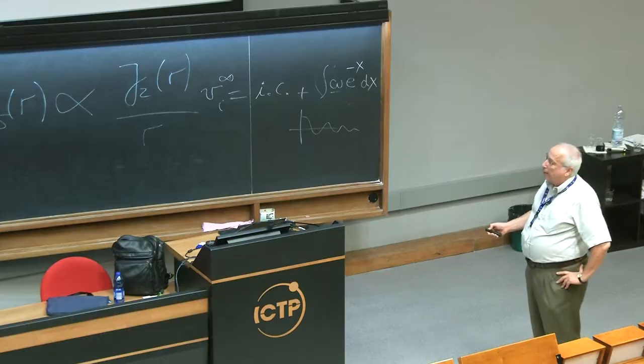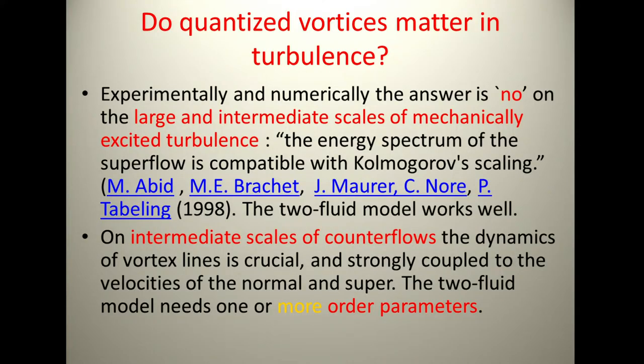counterflow is the turbulence you get if you have a channel of liquid helium-4 with temperature T1 here, temperature T2 there, and the normal fluid goes one way and the superfluid goes the other way. Suddenly, it has been discovered that at intermediate scales, the dynamics of vortex lines is crucial.